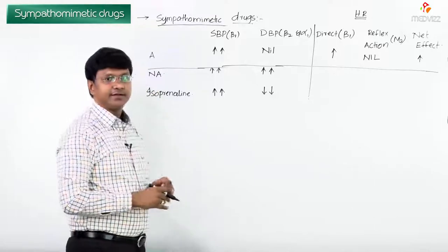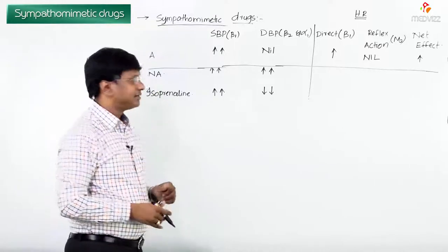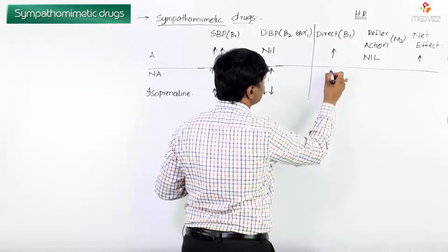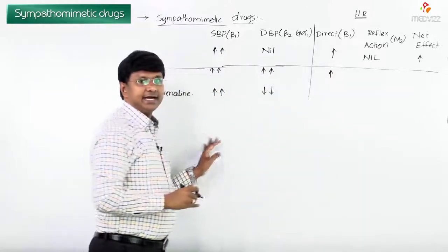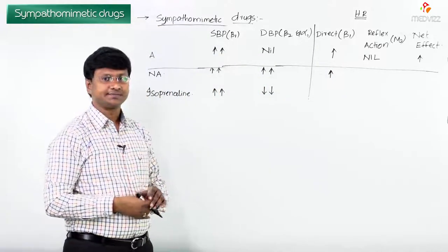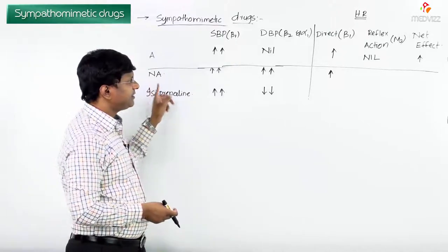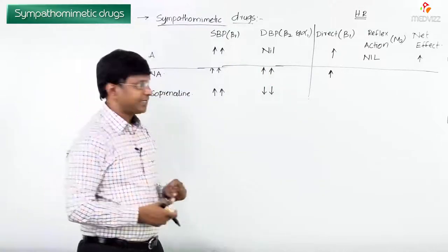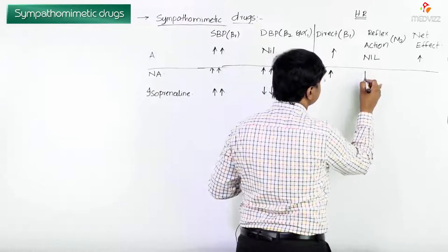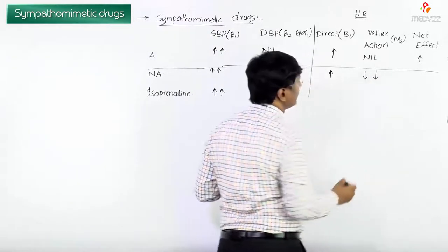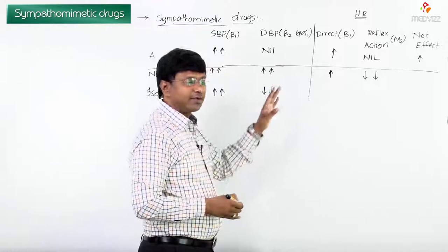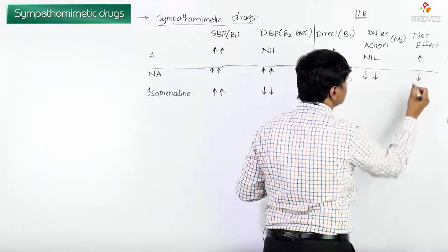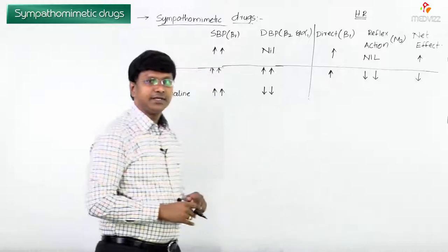For noradrenaline: it stimulates beta-1 receptors thereby increasing heart rate directly, but noradrenaline also acts on M2 receptors and the reflex action is a decrease in heart rate. So the net effect of noradrenaline is a decrease in heart rate.